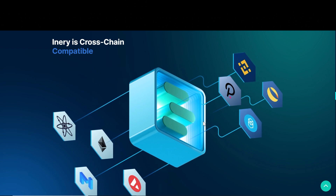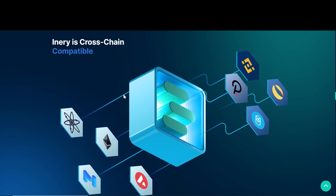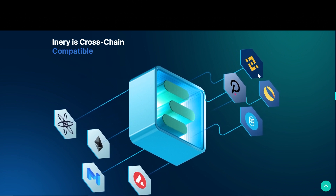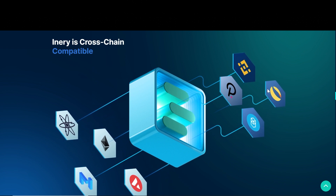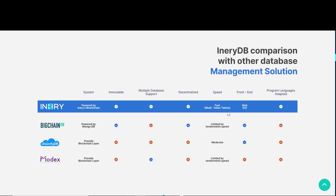One of the biggest strengths of Inary is cross-chain compatibility, which is a game changer in the sense that we want to be able to not be restricted to one blockchain. From this chart, you can see the comparison of InaryDB with other database management solutions. Inary is immutable, supports multiple databases, is decentralized, gives you fast speed, and supports an adapted program language — features that competitors like Bigchain and Modex do not fully provide. In fact, Inary is the first decentralized data system. Most solutions on the market only offer decentralized storage solutions, whereas Inary integrates CRUD and query functionality for a complete suite of database services on a decentralized infrastructure.